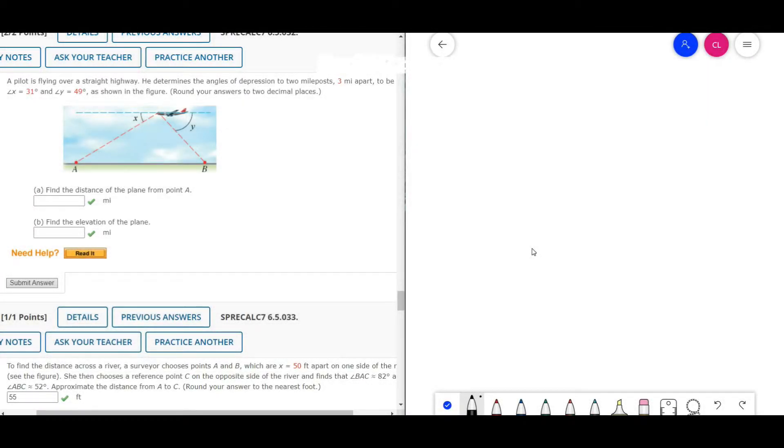A pilot is flying over a straight highway. He determines the angles of depression to two mile posts three miles apart. Angle X is 31 degrees, angle Y is 49 degrees. Let's start this off by sketching out the problem and filling in the given information.